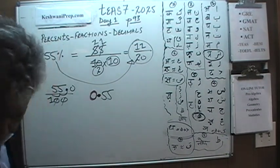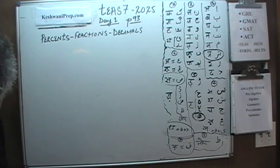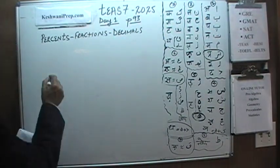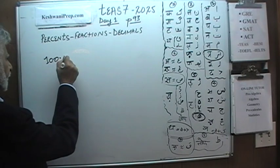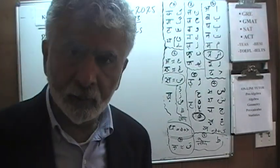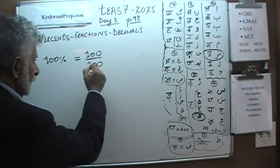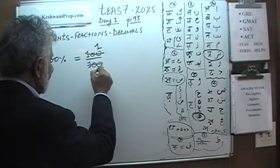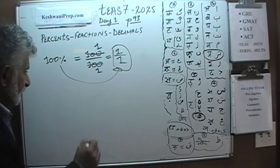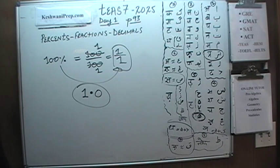Number 4 is straightforward: 100 percent. 100 percent means 100 out of 100. Dividing top and bottom by 100 gives us 1 over 1. So 100 percent expressed as a fraction is simply 1 out of 1, and as a decimal it is just 1 — or 1.0 if you prefer.